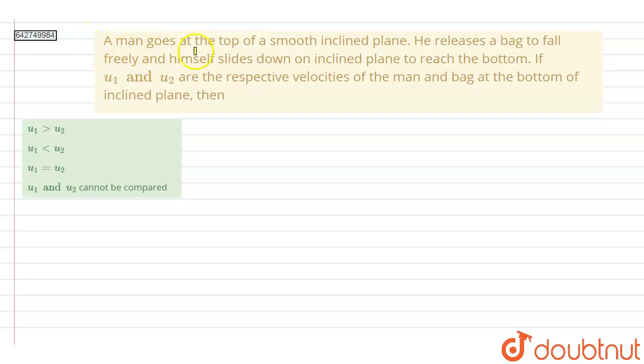A man goes to the top of a smooth inclined plane. He releases a bag to fall freely and himself slides down on inclined plane to reach the bottom. If u1 and u2 are respective velocities of the man and bag at the bottom of the inclined plane, then we have to find the relation between u1 and u2.